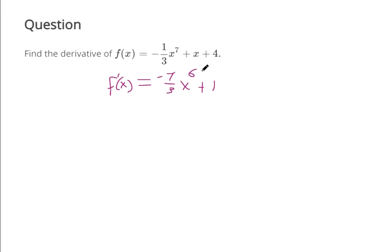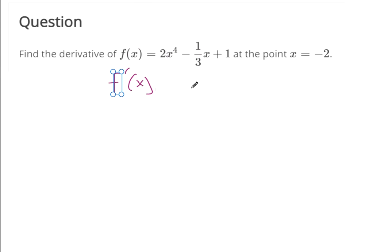They want us to find the derivative at x equals negative 2. So let's first find the derivative. So using the power rule, that 4 comes down and multiplies. And then the power gets reduced by 1. And now this power of 1 comes down and multiplies to 1 third. That just makes 1 third.